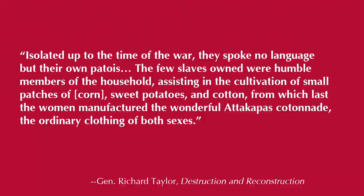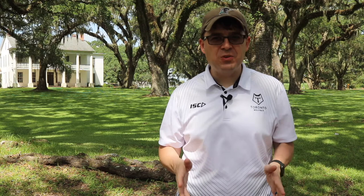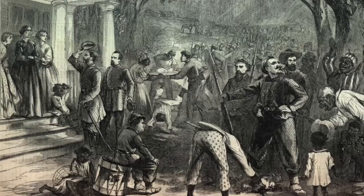General Richard Taylor described the Cajuns as: "Isolated up to the time of the war, they spoke no language but their own patois. The few slaves owned were humble members of the household, assisting in the cultivation of small patches of corn, sweet potatoes, and cotton." Those civilians who could escape the Union advance did so, while others waited with a mixture of fear and trepidation. Foreign flags appeared on some houses owned by immigrants, with the thought that a soldier wouldn't dare harm the property of an alleged British or French citizen.